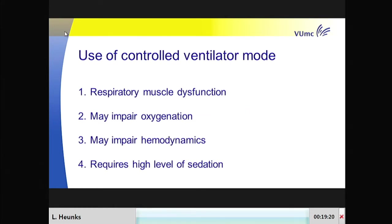Using controlled ventilator mode—taking the patient's respiratory muscles out of the loop—does have adverse effects, in particular on the respiratory muscles. When you're using the diaphragm, you may recruit the lung, which improves oxygenation. If we're not using the diaphragm, it might, under certain conditions, promote lung collapse, deoxygenation, and shunting.